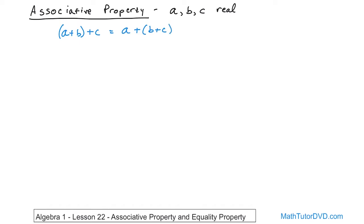A lot of students look at this and have no idea what it means, because when you first look at it, you see some parentheses. All they did between the two sides is take these parentheses away and put them over here — somehow that's called the associative property. When you have parentheses, you have to do what's inside the parentheses first, because of order of operations.